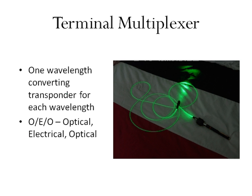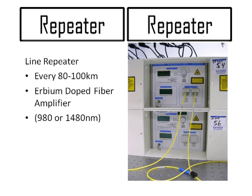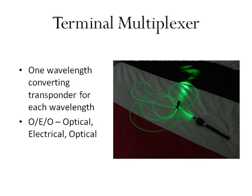At the beginning of the terminal multiplexer, there is one wavelength-converting transponder for each signal wavelength it is going to carry. It receives an input optical signal from the client layer, converts that signal to an electrical signal, and retransmits it using a 1550 nanometer band laser.